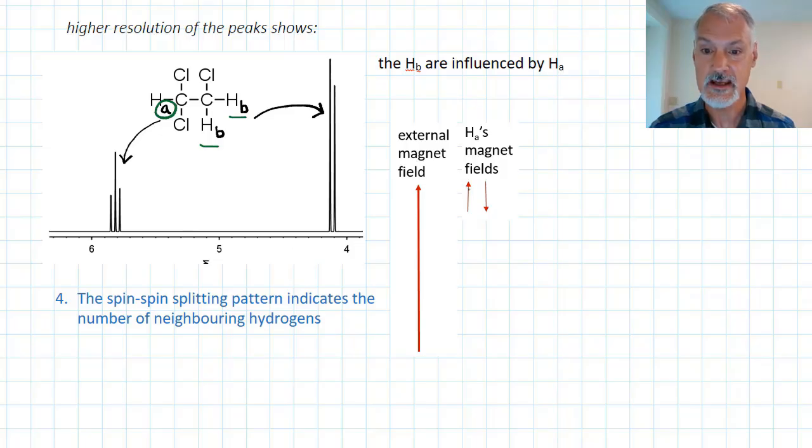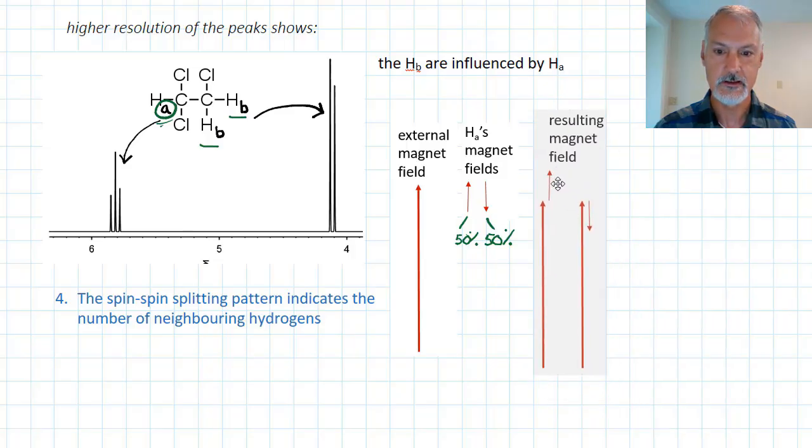So I could have the hydrogens at A spinning in one direction, generating a magnetic field that aligns with the external, or the hydrogen at A could be spinning in such a way that it's against the magnetic field, the external magnetic field. Now there's a 50-50 chance that it could be in either of these states. So 50% of the time it could be like this, 50% of the time it could be like this. So if I now look at the environment that's experienced by B, I have the external magnetic field as well as the magnetic fields that are generated by A interacting. So 50% of the time they could add and 50% of the time they could subtract.